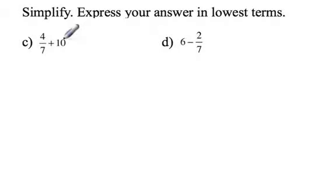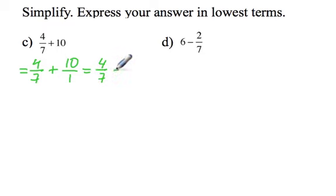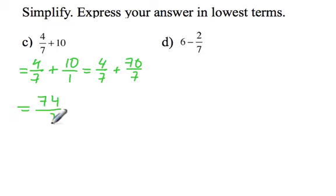There are two ways of doing this question. We will do the longer way first. The longer way would be to see that we have 4 sevenths and we have to add 10, so we will change 10 to a fraction. Once we have a fraction we need a common denominator to add fractions, so we will change 10 over 1 to 70 over 7, because we want a denominator of 7, and that equals 74 over 7.